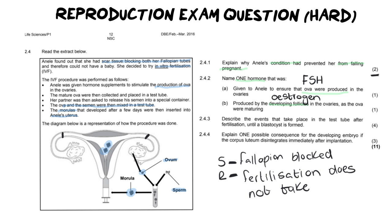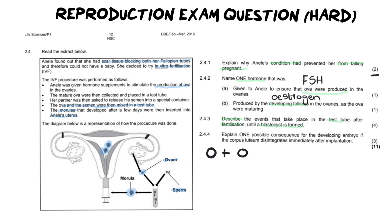Moving on to our next one. 2.4.3 says, describe the events that take place in the test tube after fertilization until a blastocyst is formed. Now, you will notice that this question is out of four marks, which means it's going to require quite a bit of detail in your answer. And basically, they are asking you to explain from fertilization to a blastocyst. So let's quickly put that into perspective of what we've learned in class before. We have an egg cell, and we are combining it with a sperm cell. And this is what we would need to say for four marks.